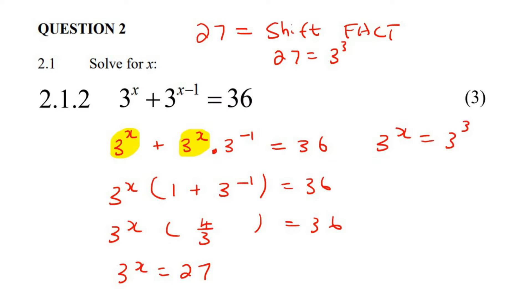So we could say 3^x is equal to 3 to the power of 3. Now when these two are the same, we can ignore them, and then we just end up with x equals to 3.